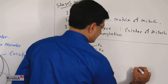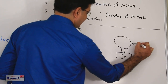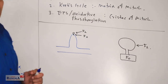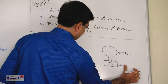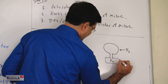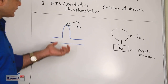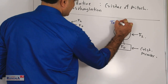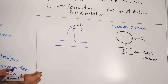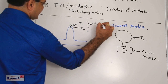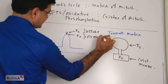The structure is like this: the base is the F0, and the stalk and head form the F1 particle — it is similar in shape to a racket. F0 is embedded in the cristae membrane, and F1 protrudes out towards the matrix of mitochondria. These F0 and F1 particles are also called ATPase, or simply elementary particles.